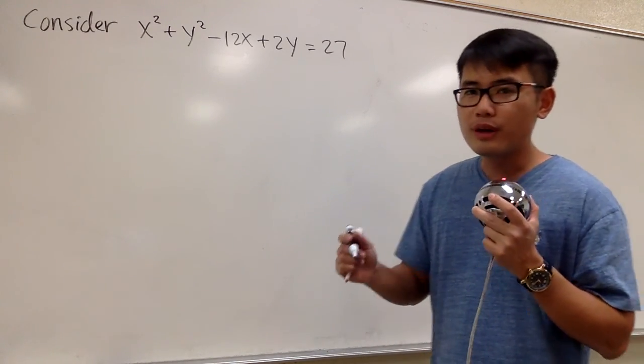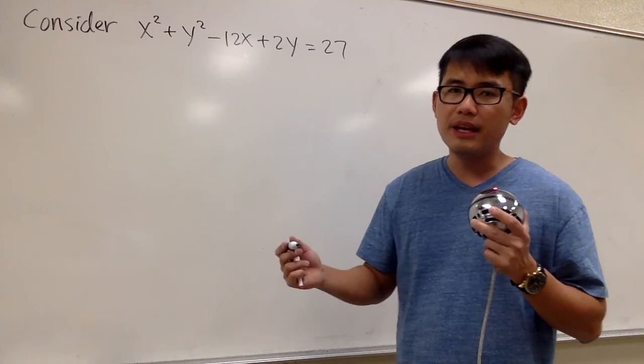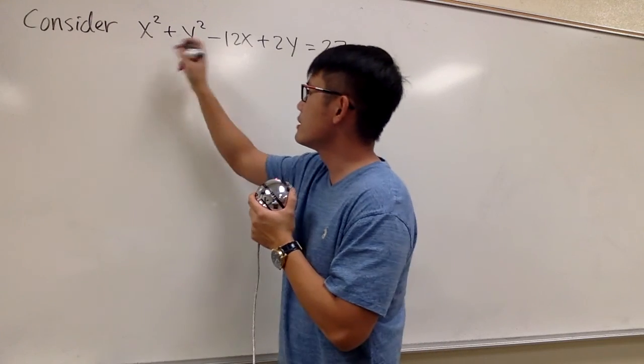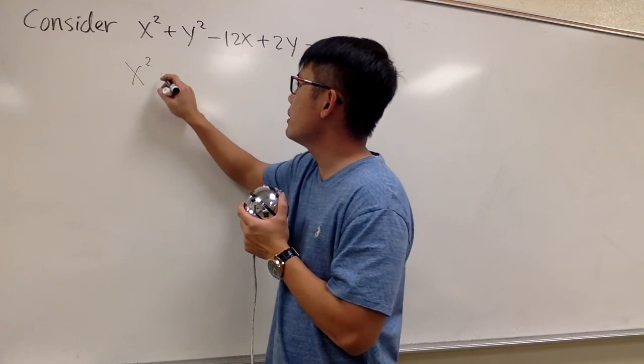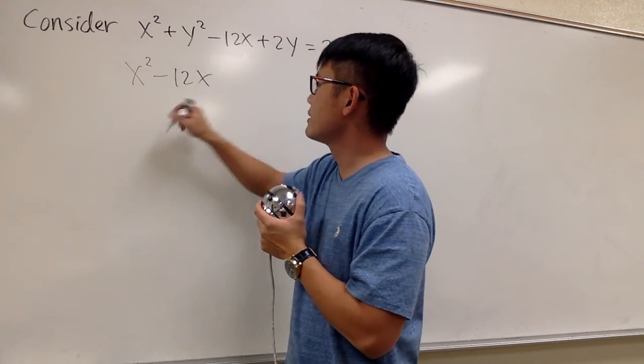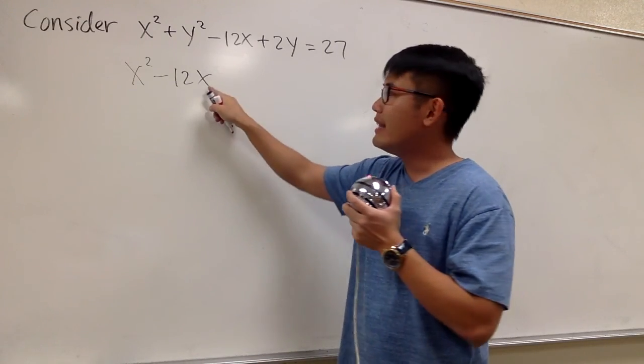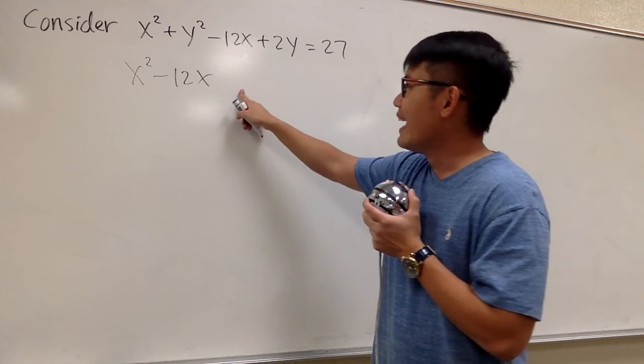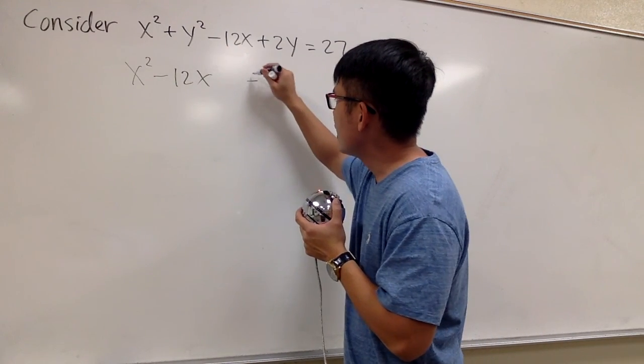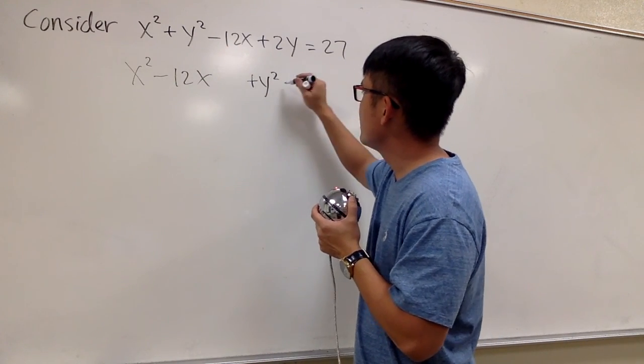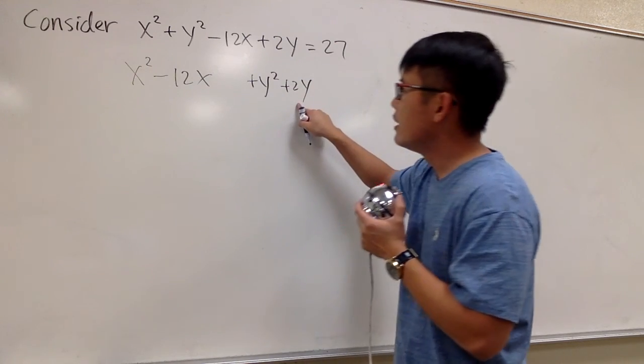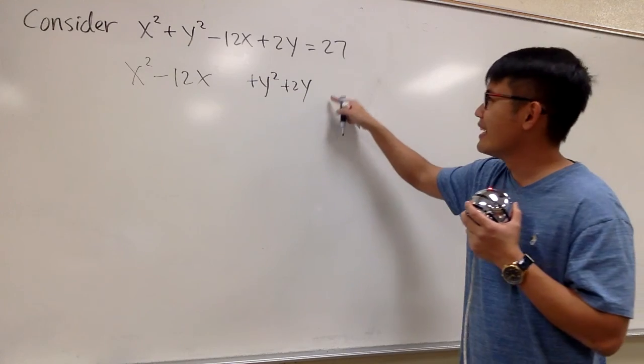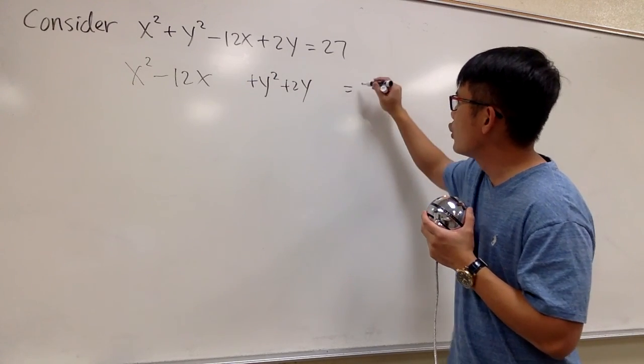First of all, we have to focus on x squared plus bx. So this and that together, let's write it down first. Write down x squared minus 12x, just these two terms first, and then we leave a space for a special someone. And then we'll write down the y squared plus 2y, and we also leave a space for the special someone. And then we'll bring this down equals to 27.